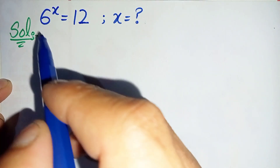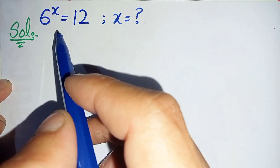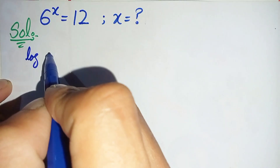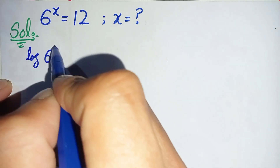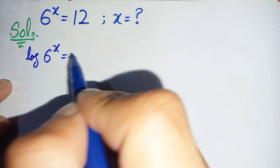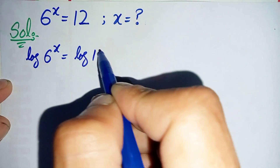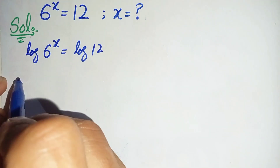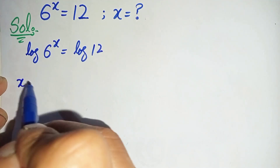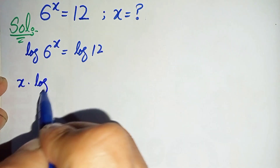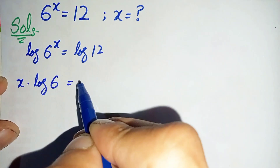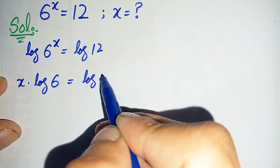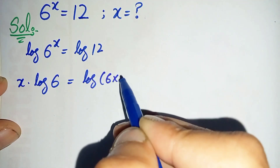In the first method I will take log on both sides of this equation. So log of 6 raised to power x is equal to log of 12. We will move this power to the front of the log, so it becomes x times log of 6 is equal to log of 12, and we can write 12 as 6 times 2.